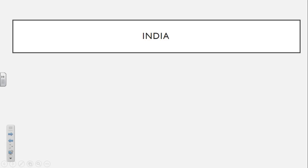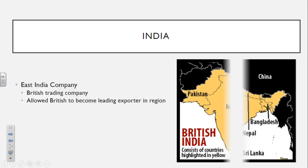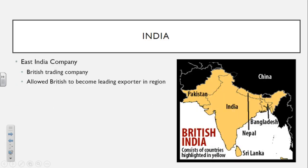Let's move on into India. India is going to be controlled at first by the East India Company, which is simply going to be a British company. Their goal was to provide a way for the British in this region to make money and ship their product back to England. It's going to allow the British to become the leading exporter in the region of India.